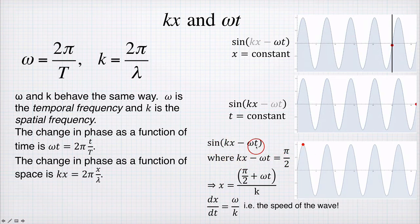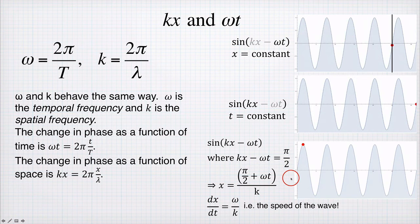Which is convenient because when kx minus ωt is π on 2, it puts us at the peak of the sine wave. So in other words, this point up here. So our red dot is sitting at the maximum of the wave. Now if I want to know what the position of this red dot is as a function of time, I can rearrange this equation to solve for x. So x is π on 2 plus ωt divided by k.